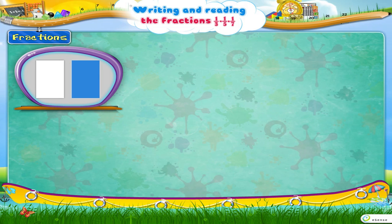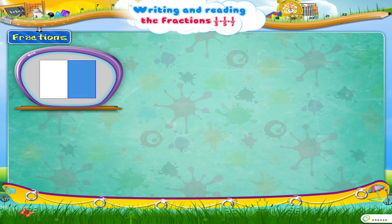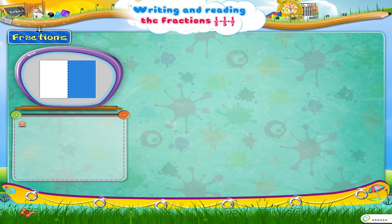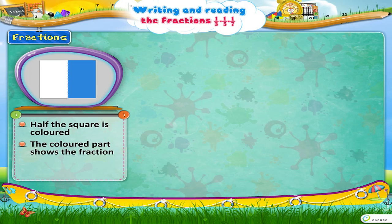This square is divided into two equal parts, out of which one is coloured. So we say that half the square is coloured. The coloured part shows the fraction 1 upon 2, that is, half.